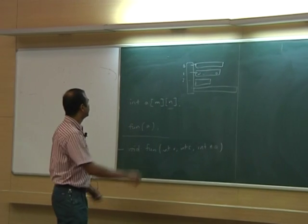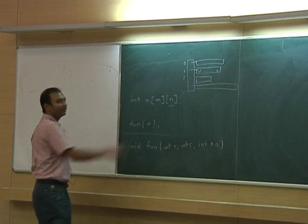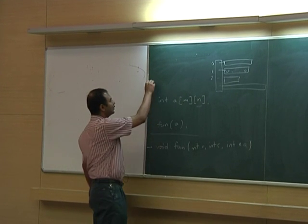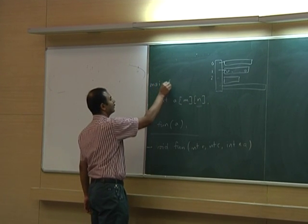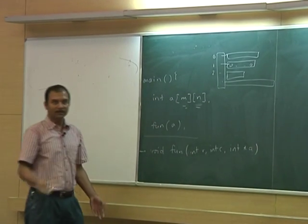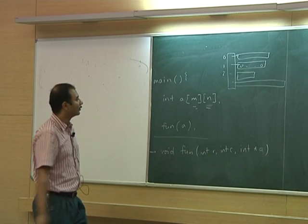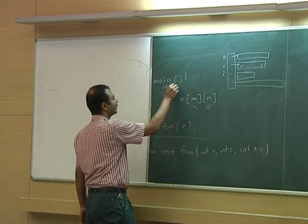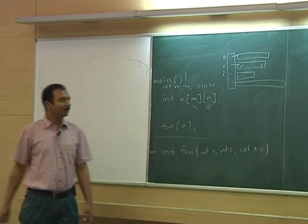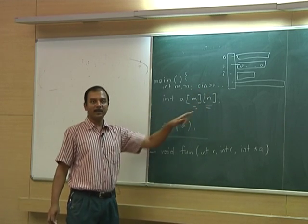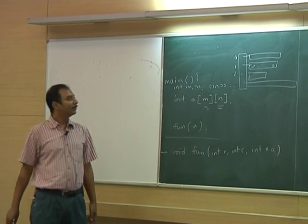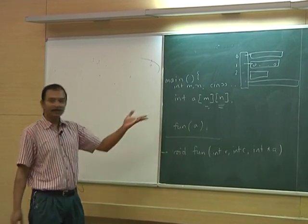If you are declaring a two-dimensional native matrix, you can do it as follows. Suppose you are doing that inside main — at this point m and n need to be defined and known; the values have to be known. Suppose you have declarations like int m, n and then you read them from cin, then the values will be known and the compiler can generate code for the necessary memory allocation to create that 2D array.